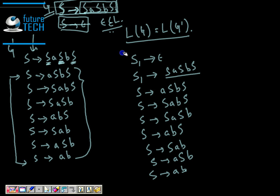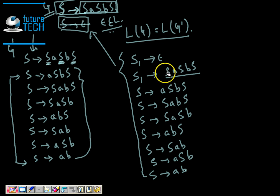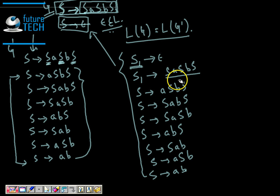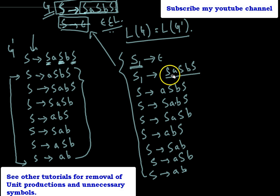This gives a grammar equivalent to the original. We have successfully incorporated ε as part of the language by introducing the new start symbol S1, making sure S1 does not appear on the right-hand side of any rule. This ensures it is not a length-decreasing grammar — it is always length-increasing — and all other epsilon productions have been successfully eliminated.